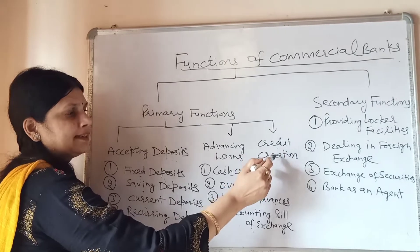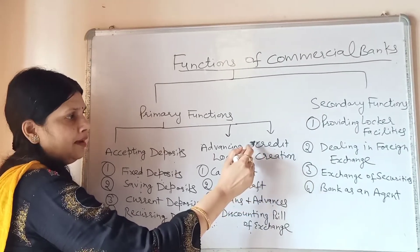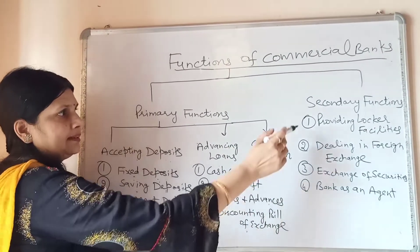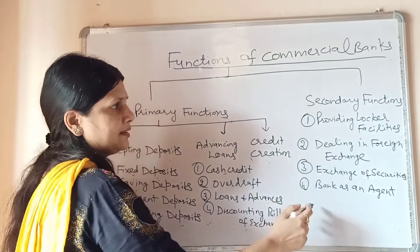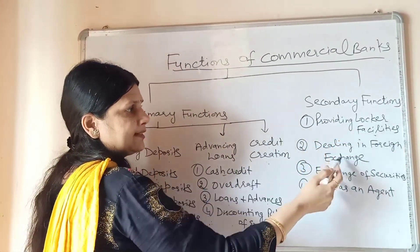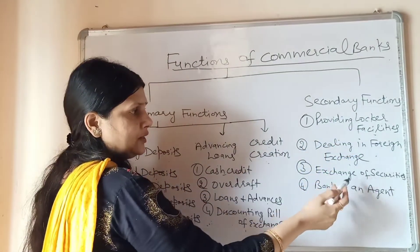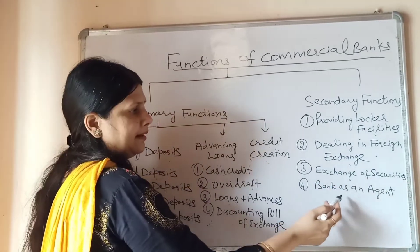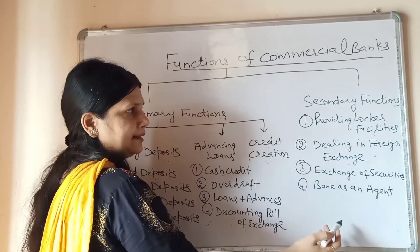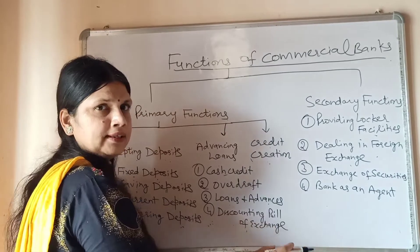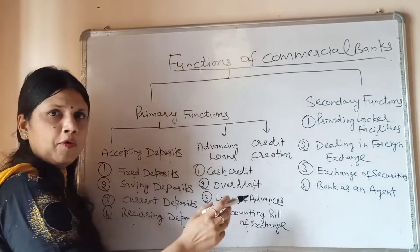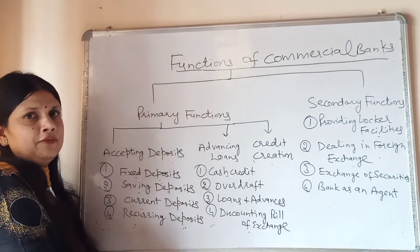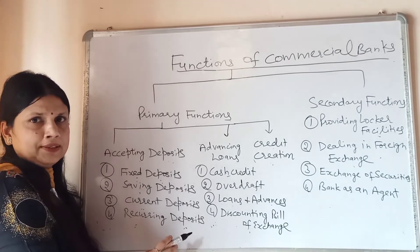The third primary function is credit creation — how commercial banks create credit. Secondary functions include providing locker facilities, dealing in foreign exchange, exchange of securities, and bank as an agent. Besides these, there are also some modern functions, which we will study one by one.